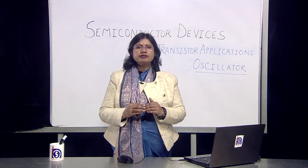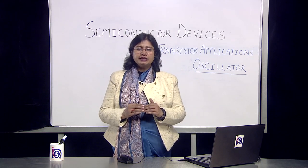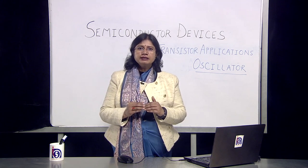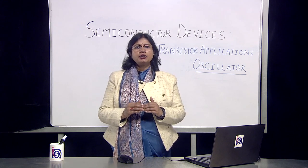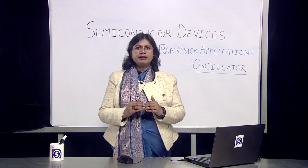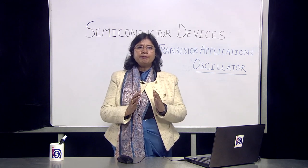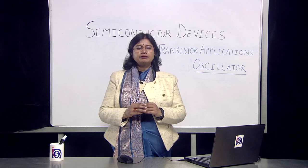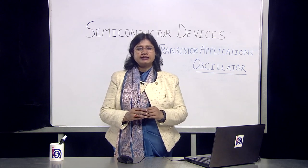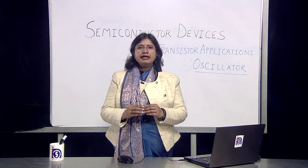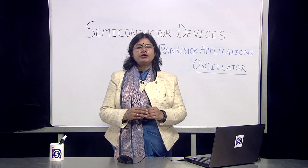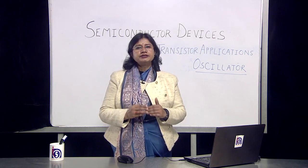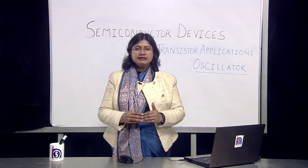We discussed the working of a Colpitts oscillator. In a Colpitts oscillator, we have a simple LC tank circuit which acts as a feedback mechanism. The simple amplifier connected to the feedback mechanism forms a Colpitts oscillator, and there are a number of frequency generators which use a transistor as an oscillator.